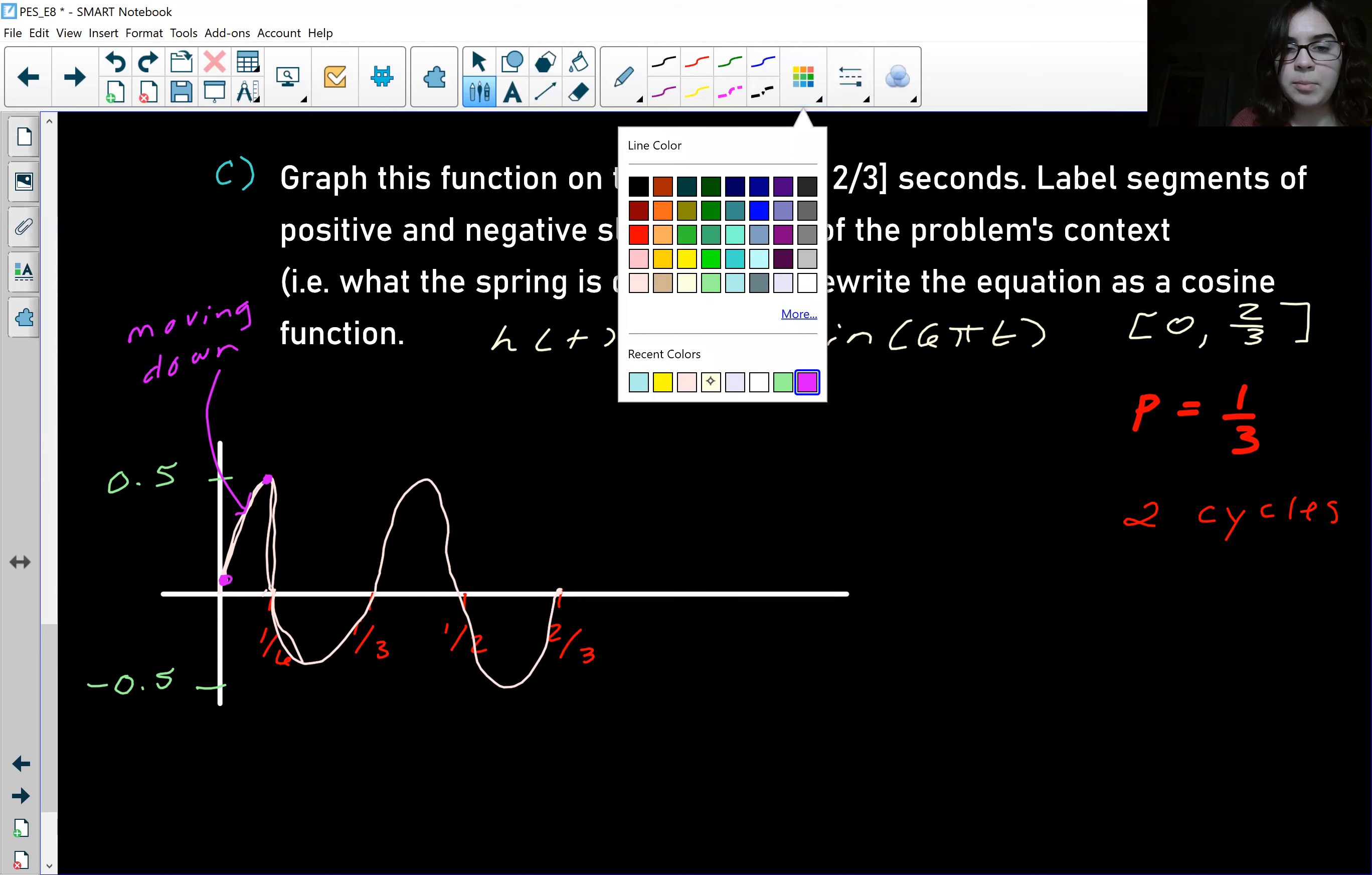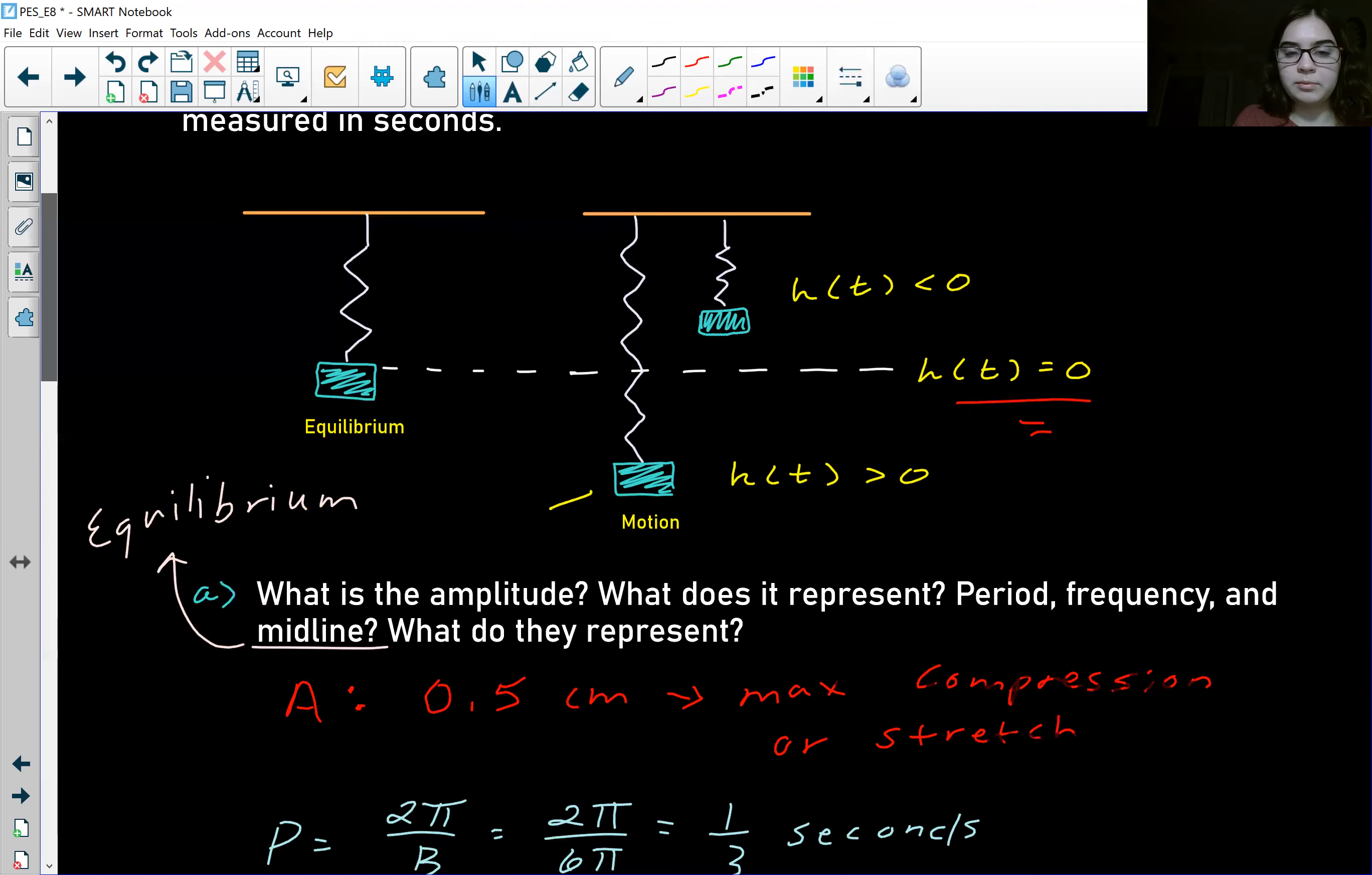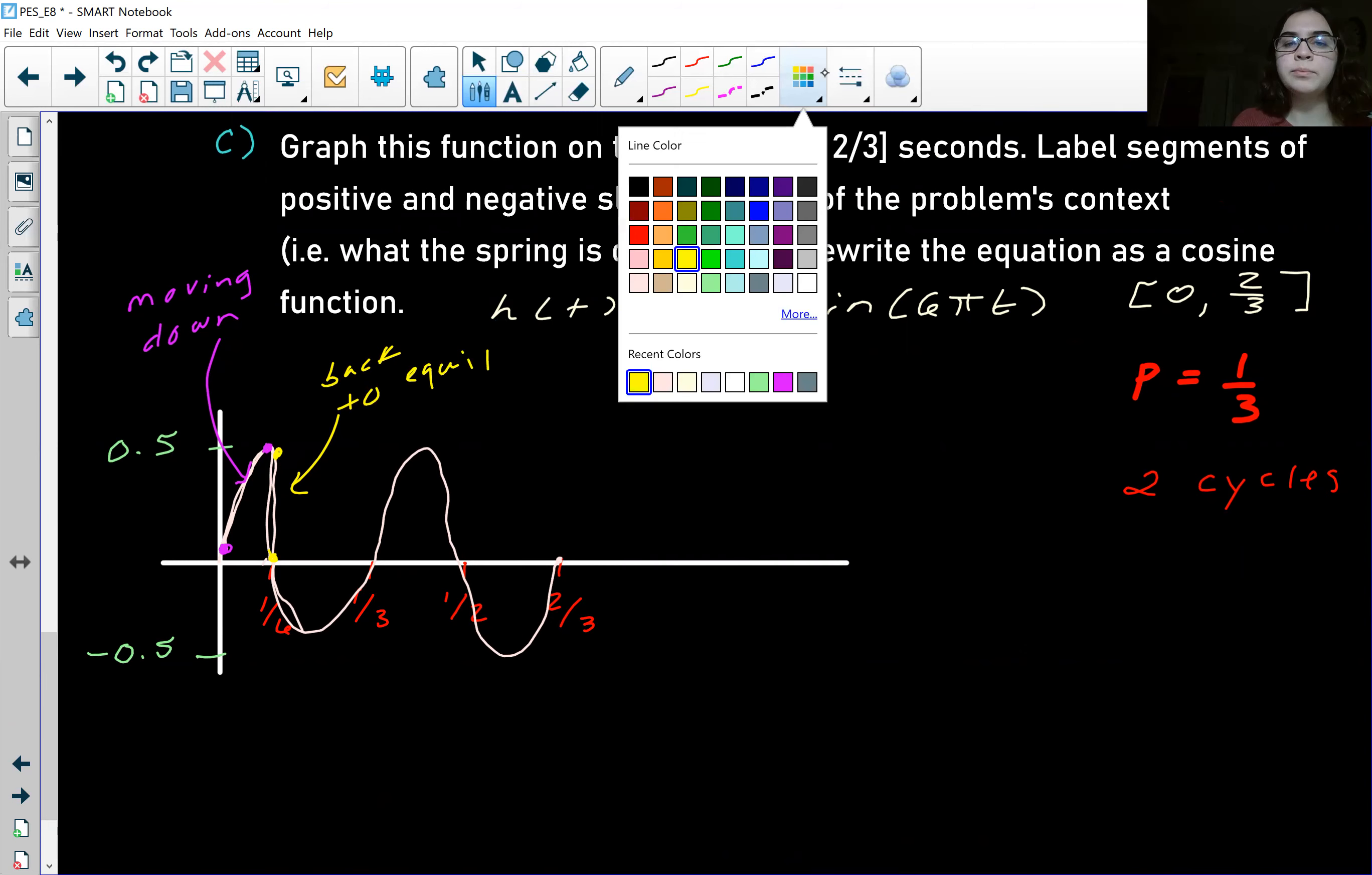And then let's talk about the next segment. It's still in the positive quadrant, so the spring is still stretched, but now it's moving back toward equilibrium. So if we go back to our diagram, the spring is like at this point, and now it's moving back up. So we can say back to equilibrium, but it's still technically stretched.